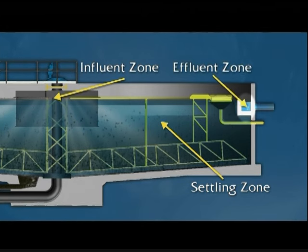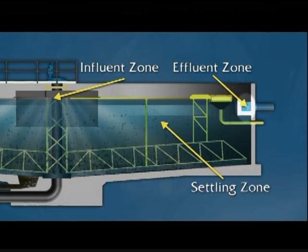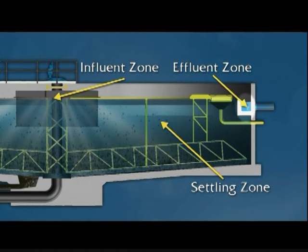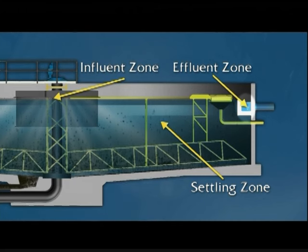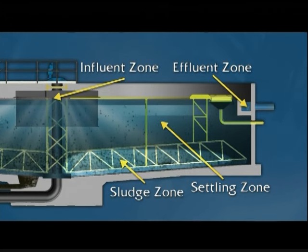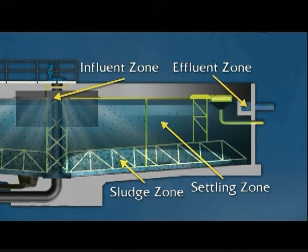Three, the effluent zone provides a smooth transition from the settling zone to the effluent flow area. It's important that currents don't stir up any settled solids and carry them into this area. Four, the final zone is the sludge zone, where settled solids are separated from other particles in the settling zone.